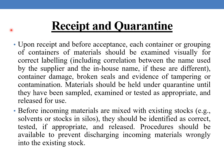Coming to receipt and quarantine: upon receipt and before acceptance, each container or grouping of containers of materials should be examined visually for correct labeling — including correlations between the name used by the supplier and the in-house name if these are different — container damage, broken seals, and evidence of tampering or contamination. Materials should be held under quarantine until they have been sampled, examined or tested as appropriate and released for use. Before incoming materials are mixed with existing stock, for example solvents or stocks in silos, they should be identified, correctly tested if appropriate, and released.